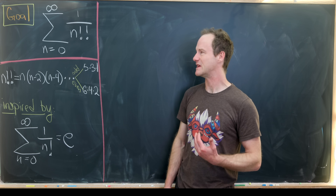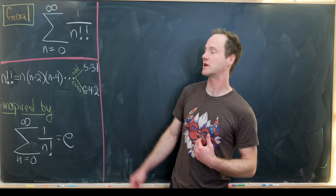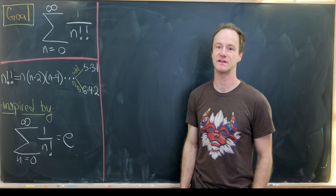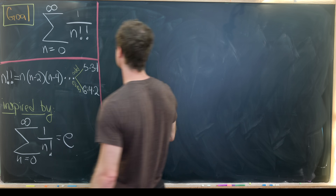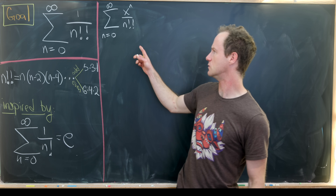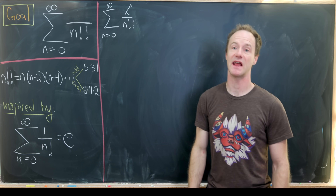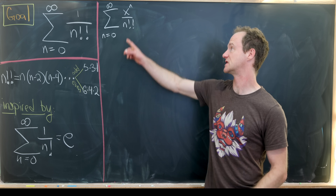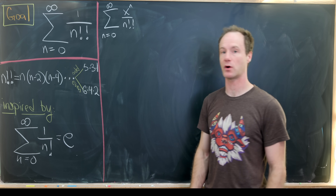So let's get started. Instead of looking at this thing exactly, we'll look at a power series related to this: the sum as n goes from 0 up to infinity of x to the n over n double factorial. In the end, we're going to evaluate this at x equals 1. The nicest way to approach this is to split this into even and odd parts.